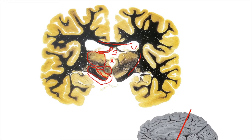Above the substantia nigra is the red nucleus — a very prominent, circular nucleus that actually appears pink in a normal unstained brain. The red nucleus is part of the rubrospinal tract. We can also now see the lateral geniculate nucleus (LGN) above the hippocampus. The LGN is the target of the optic nerve and the first extra-ocular processing center for visual information in the central nervous system. It's said the LGN looks like Napoleon's hat.